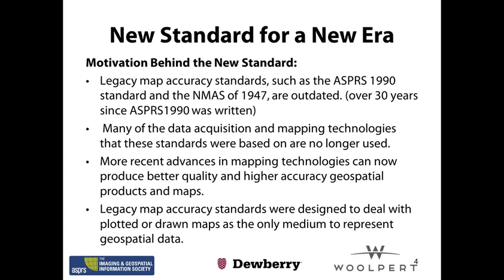Many of the data acquisition and mapping technologies these standards were based on are no longer used — paper maps, analog plotters, and film cameras, especially in North America. More recent advances in mapping technology can now produce better quality and higher accuracy geospatial products. The old standard was based on the capability of analog technology at the time. With new technology, computer processing capability, and new processes, we are able to get more accurate products nowadays.